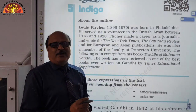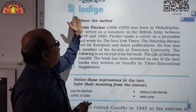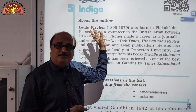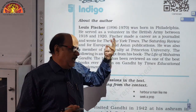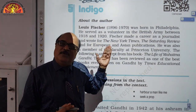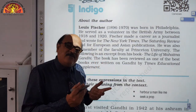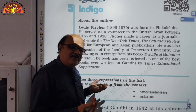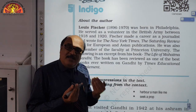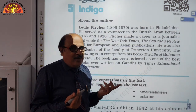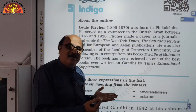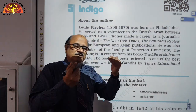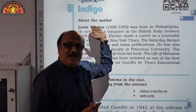Today we are going to start Chapter Number 5 — Indigo — from your book Flamingo. This is a very interesting chapter based on the days when India was struggling for its freedom. We were striving for independence; so many freedom fighters gave away their lives very happily for the sake of our independence. They died for us so that we may live as a free nation. They wanted to see their nation and us free.